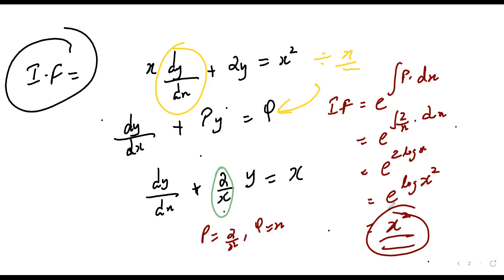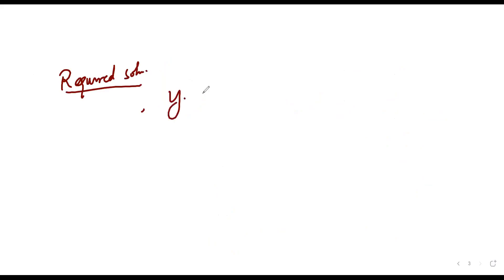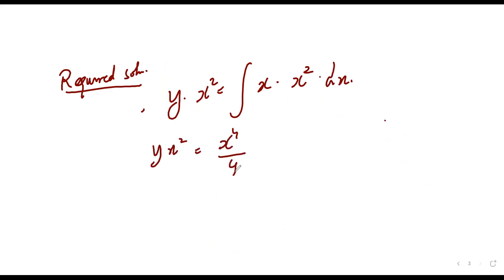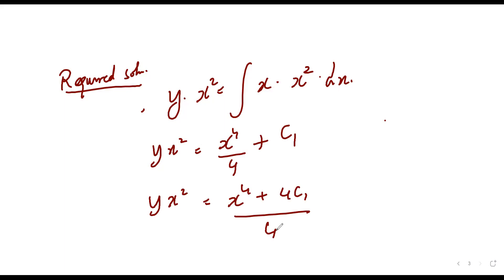Now with integrating factor x², the required solution is y · x² = ∫Q · x² dx = ∫x · x² dx = ∫x³ dx = x⁴/4 + C₁. So y · x² = x⁴/4 + C₁, which gives x⁴ + 4C₁ all over 4.